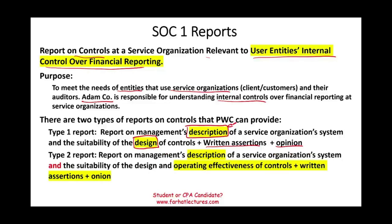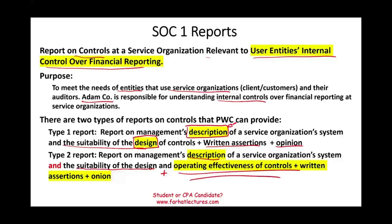Type 2 also reports on management's description and the suitability of the design — everything in type 1 — plus the operating effectiveness of the controls. When they give you a type 2, it means they tested the controls and are giving you a report about their effectiveness. So type 2 is simply type 1 plus a report on operating effectiveness. If you're at a company and want more assurance, you want type 2. It will also include written assertions and an opinion.